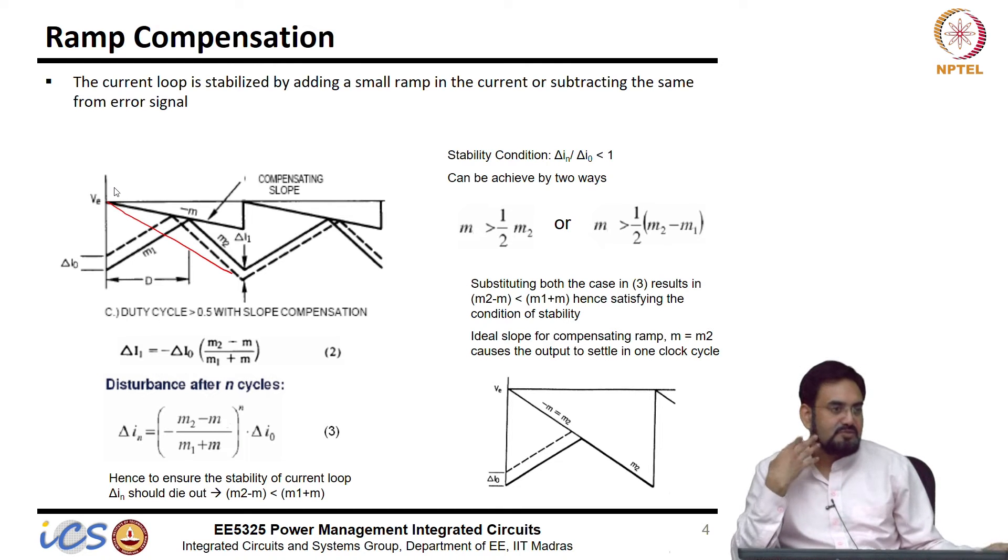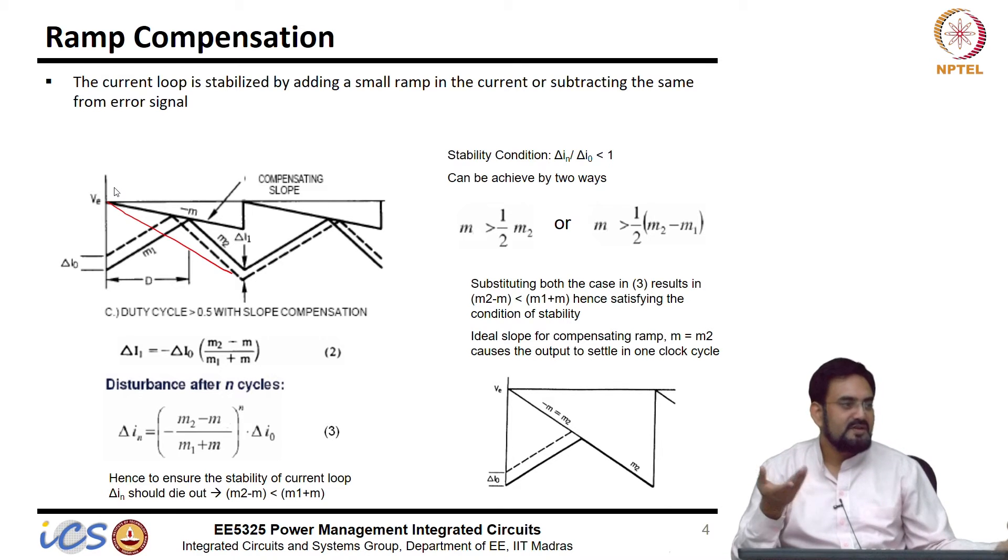So, because this is more significant. So, what happens? If you control the duty cycle with the external ramp, what does it become? Voltage mode control.